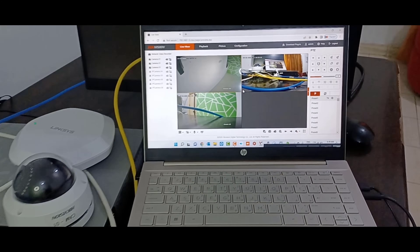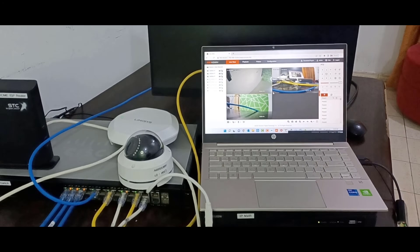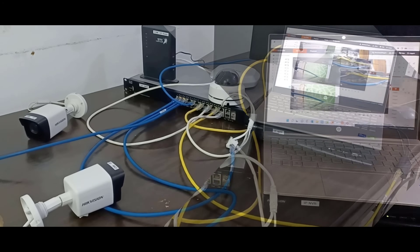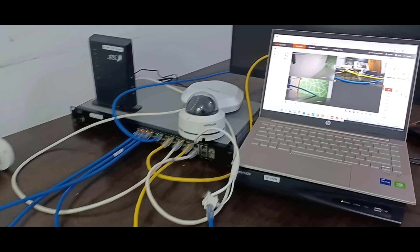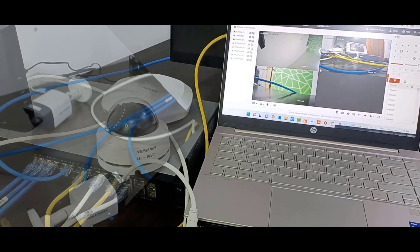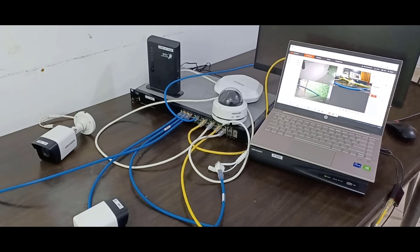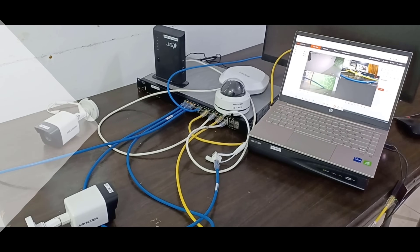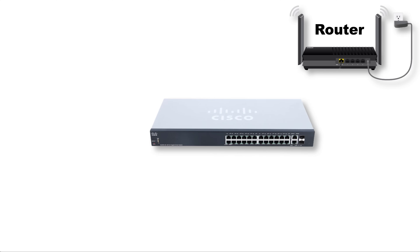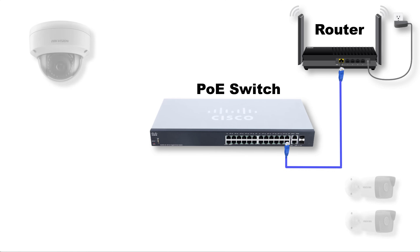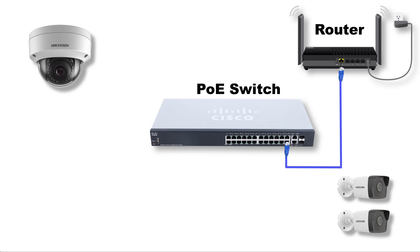Hello friends, in this video I'm going to show you a practical step-by-step process of installation and configuration of an IP CCTV camera system using a PoE switch. Let me show you my network diagram and physical connectivity. I already have an internet router from my ISP provider, and I will connect this with my PoE switch via LAN cable, then connect all other devices to this PoE switch, like IP cameras via Cat6 LAN cable.